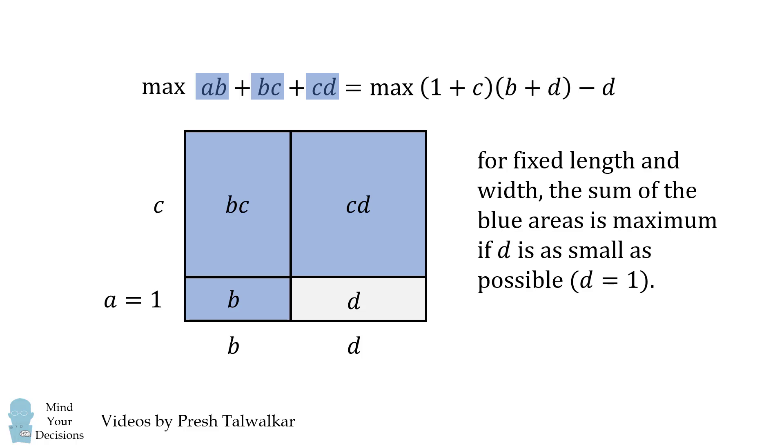Now similarly, for a fixed length and width, the sum of the blue areas is maximum if D is as small as possible. So we need D to be the smallest positive integer, which is 1. Here's a visualization of that.